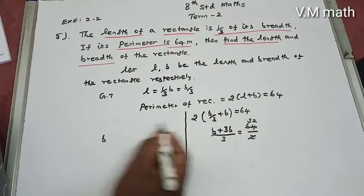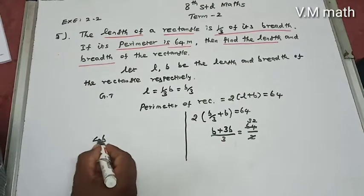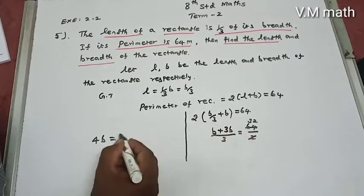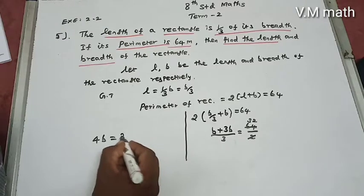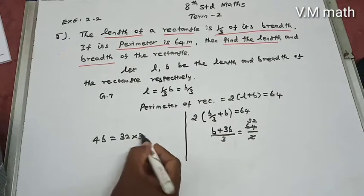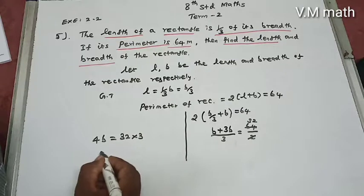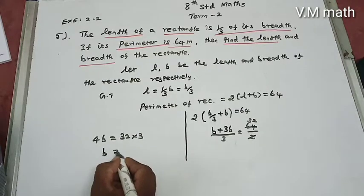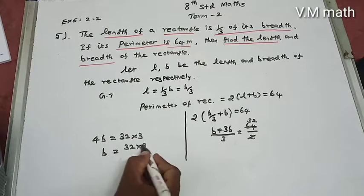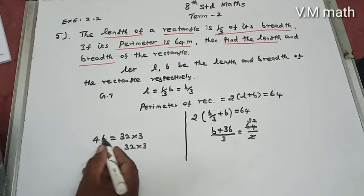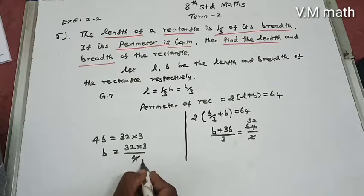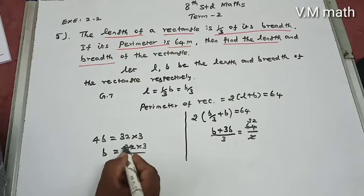B plus 3B is 4B. So 4B equals 32 into 3. Dividing both sides by 4, we get 4B divided by 4, which simplifies — 4 cancels once, giving 8 times 3.